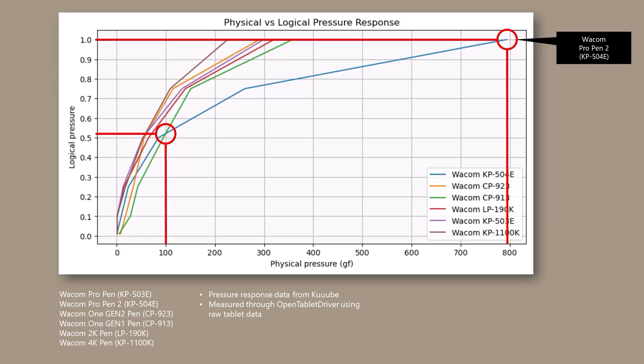If you're working really under 100 gram force, you may find it hard to produce a line that has a consistent width. Because, again, small changes in physical pressure produce big changes in logical pressure.